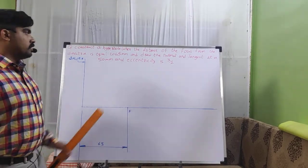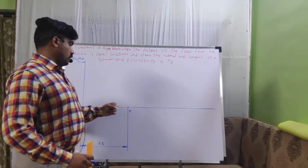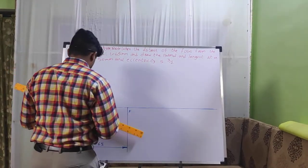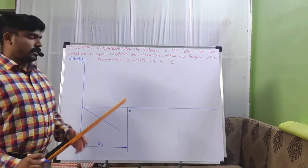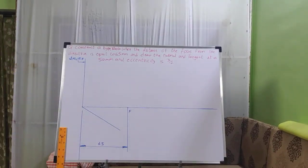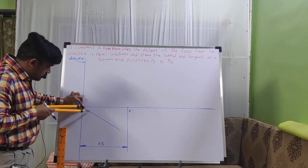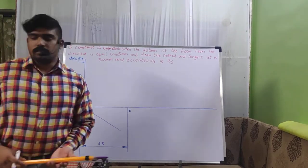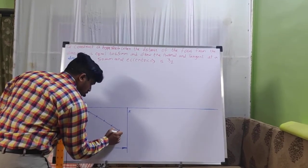By seeing the eccentricity value of 3 by 2, it has 5 divisions total. We need to divide the distance from the directrix to the focus point into 5 equal parts using the normal dividing line process method. Draw an inclined line, take out the compass, and divide it into 5 equal parts: 1, 2, 3, 4, and 5.